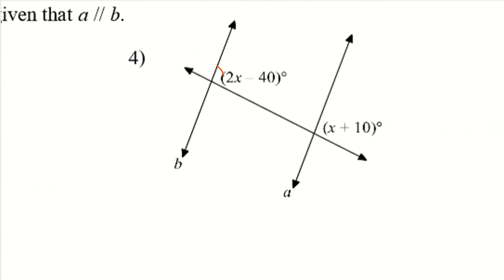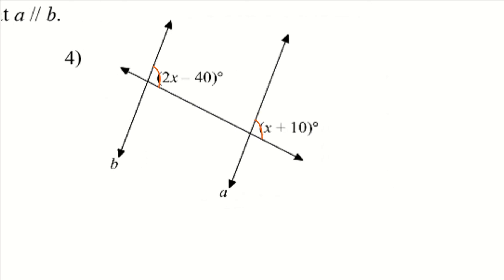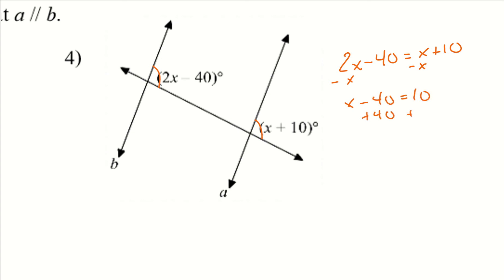For number four, these are also corresponding angles — they're on the same side of the parallel lines as well as the transversal — so they are congruent to one another. So 2x minus 40 is equal to x plus 10. Subtract x: x minus 40 equals 10. Add 40: x equals 50.